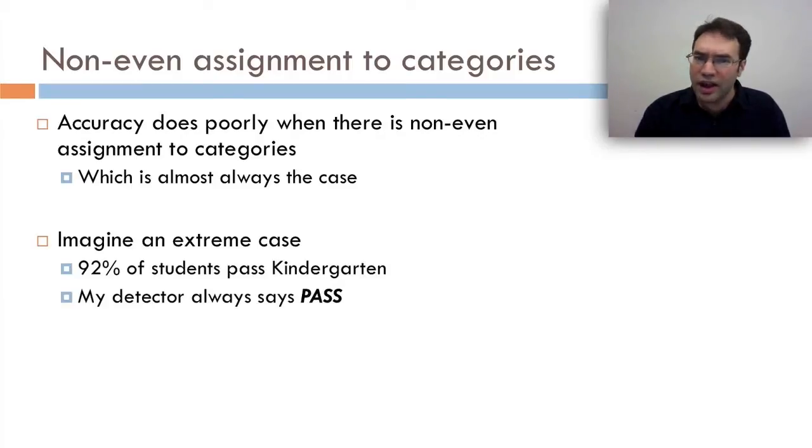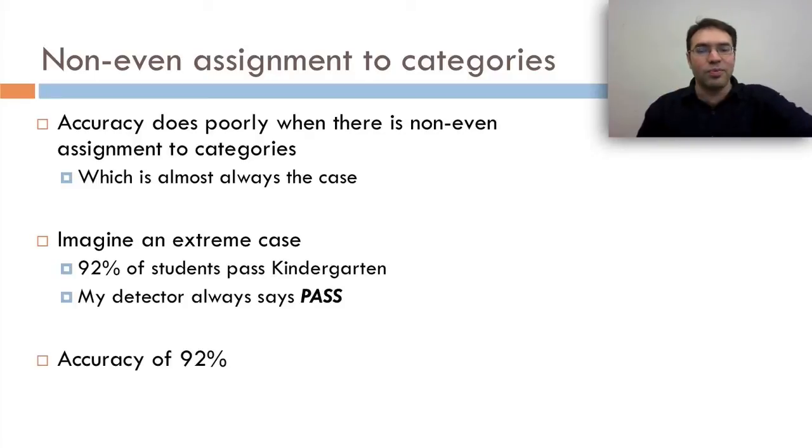Imagine an extreme case. 92% of students pass kindergarten. Probably the case, right? How many kids really fail out of kindergarten? And I've got a great detector. My detector always says pass. No matter what the data is, if the kid doesn't show up to class one day, if the kid sets fire to the teacher, my detector says pass. Accuracy of 92%. It's right in the 92% of cases where students pass kindergarten. It's only wrong in the other 8%. So despite having an accuracy of 92%, my detector is completely useless. It has no information at all.